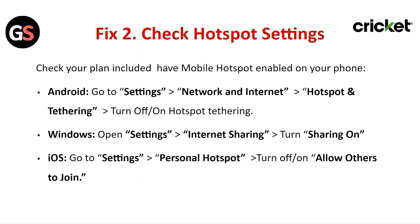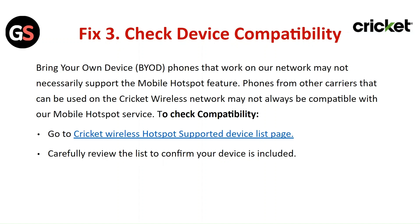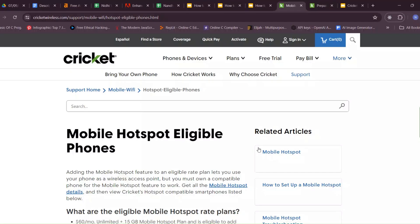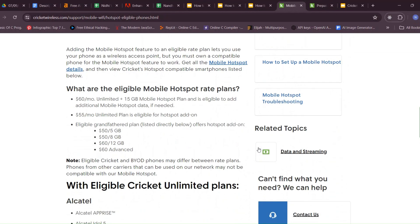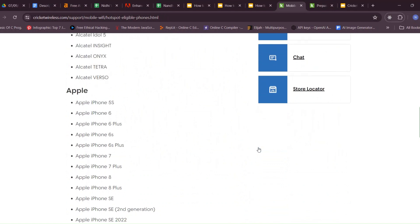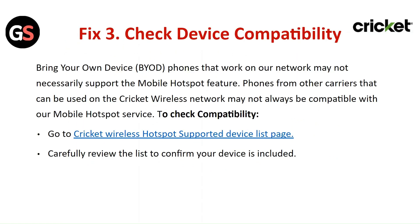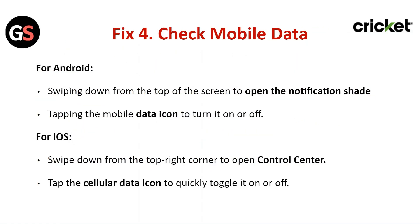Fix three: Check device compatibility. Bring-your-own-device phones that work on the network may not necessarily support the mobile hotspot feature. Phones from other carriers that can be used on the Cricket Wireless network may not always be compatible with the mobile hotspot service. To check compatibility, go to the Cricket Wireless hotspot supported device list page and carefully review the list to confirm your device is included.